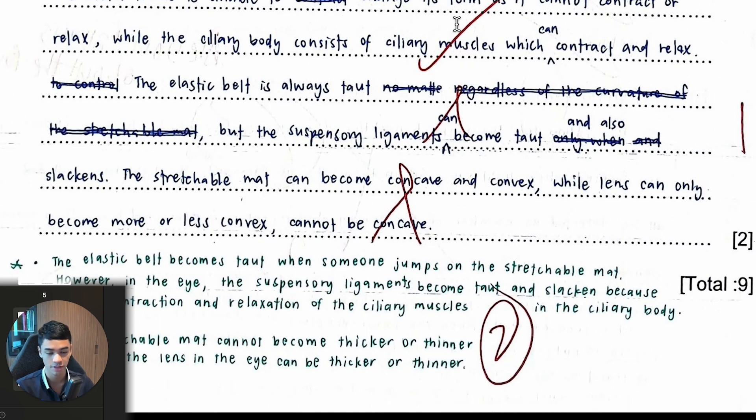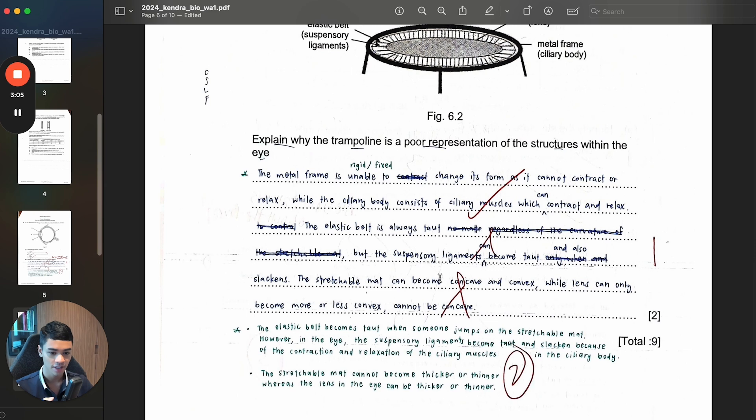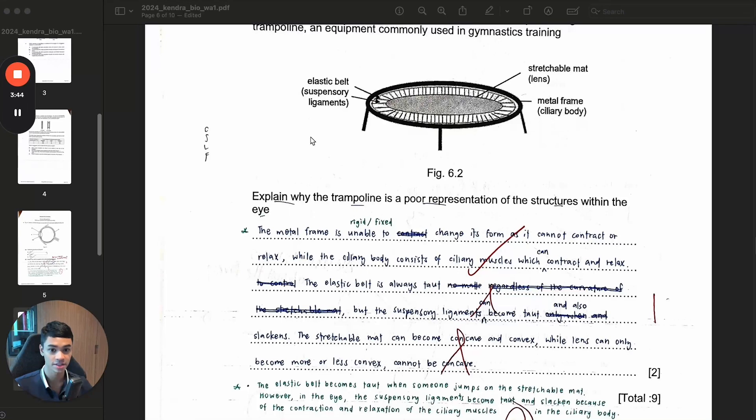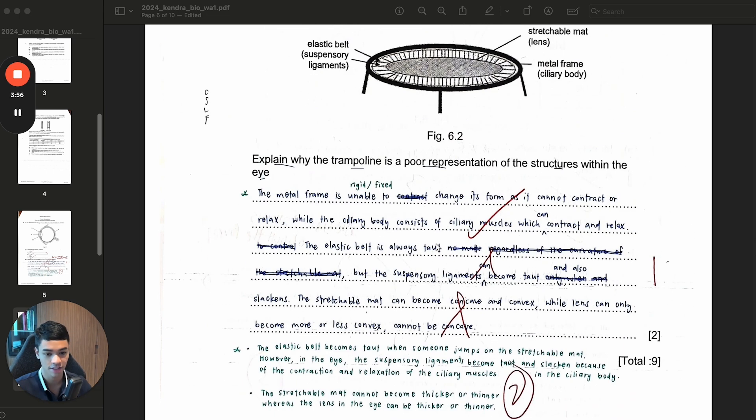They can be slackened but cannot be stretched, whereas this one is elastic. That's a big difference. The last one, stretchable mat which is the lens, can become concave and convex. This only applies to a shape. This is convex, this is concave lens. But this mat is just one line, so we can't call it concave or convex because when a person jumps on it it becomes like this, but we can't call this concave or convex. If it was me, I would say that the mat is thin and it's just one strip, whereas the lens has a thickness to it. The mat is not even convex, but a lens is convex.